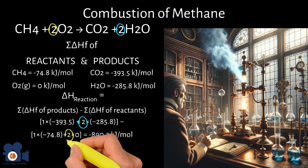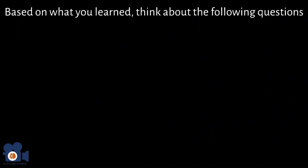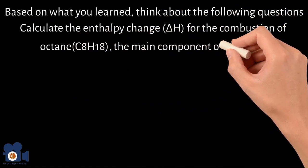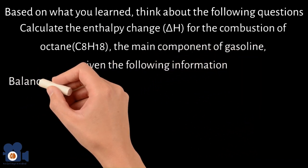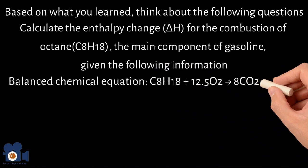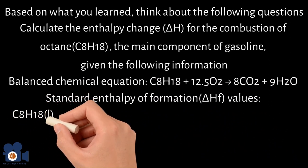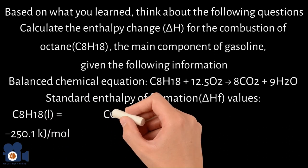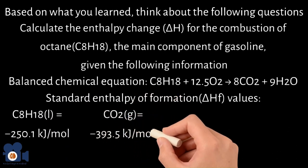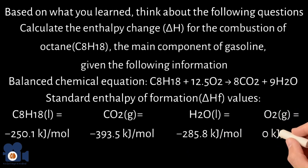By the way, that's three times more energy than the combustion of hydrogen. Based on what you learned, think about the following question: Calculate the enthalpy change for the combustion of octane, the main component of gasoline. The balanced equation is C₈H₁₈ + 12.5O₂ → 8CO₂ + 9H₂O. Standard enthalpies of formation: C₈H₁₈ = −250.1 kJ/mol, CO₂ = −393.5 kJ/mol, H₂O = −285.8 kJ/mol, and O₂ = 0 kJ/mol.